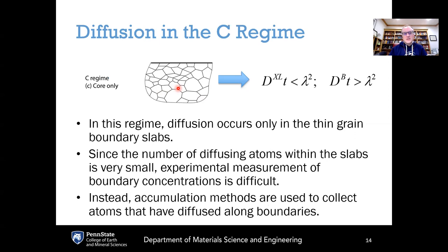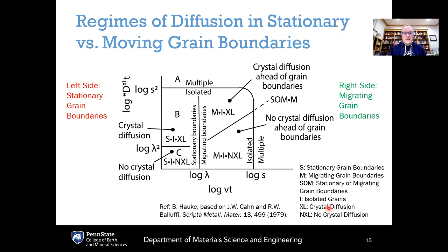The third regime is diffusion in the C regime, where diffusion within the grains is so slow that we need not consider it. The only diffusion that matters on the timescale of the experiment is along the grain boundaries themselves, so diffusion occurs only in the thin grain boundary slabs. Since the number of diffusing atoms within the slabs is very small, experimental measurement of the boundary concentrations is difficult. One common approach is an accumulation method, where diffusing atoms are collected at the opposite boundary, their total concentration is measured, and the diffusion coefficient is back-calculated.